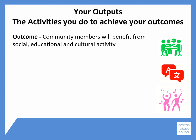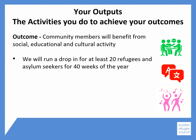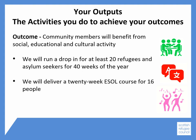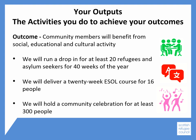Your outputs are the activities that the group will do to achieve its outcomes. If your outcome is that community members will benefit from social, educational and cultural activity, your outputs could be that you will run a drop-in for 20 refugees and asylum seekers for up to 40 weeks of the year, deliver a 20-week English language course for 16 people, or hold a community celebration for at least 300 people. These outputs all describe how you will deliver the outcome.